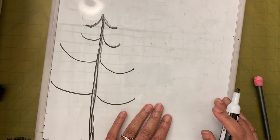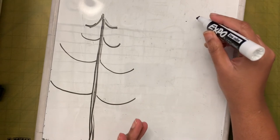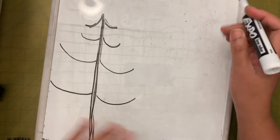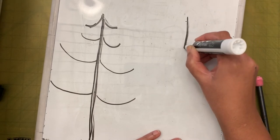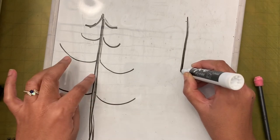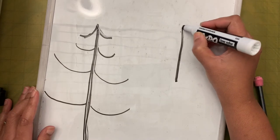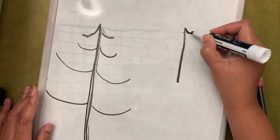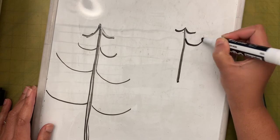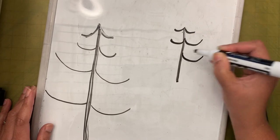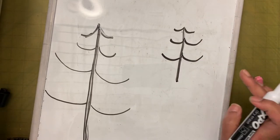Now I'm going to draw a tree a little bit further away. We are only going to draw maybe two trees because our paper is small. So for the second tree, I start from the middle and reach about half the height of the first tree. This time the C's are smaller than the ones we made for the first tree, because this is a tree that is further away. As it comes down, each C becomes bigger.